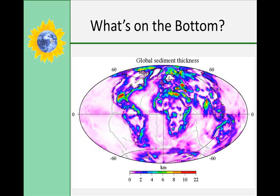The fourth category is cosmogenous sediments — cosmo means universe. These are the least abundant of all the sediments and have no distinct layer. Most dissolve in the seawater before they reach the sea floor, but they are of extraterrestrial origin and come from crashed asteroids, comets, and meteors.